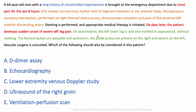On examination, the left lower leg is cold and mottled without swelling. Femoral pulses are palpable and symmetric, but pedal pulses are present on the right and absent on the left. Without finishing the question, we already know this patient has some sort of ischemia on the left leg — cold, mottled, with absent pedal pulses. Vascular surgery is consulted, and we need to determine which investigation should be considered.